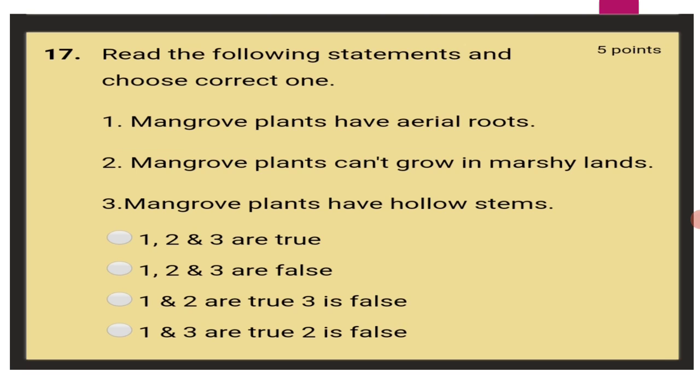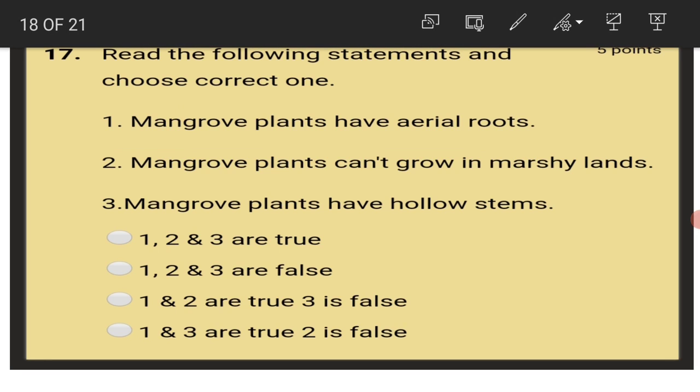Mangrove plants can't grow in marshy lands. This is a false statement because mangrove plants can be grown luxuriously in marshy lands. Mangrove plants have hollow stems. This is again a true statement. So 1 and 3 are true and 2 is false.